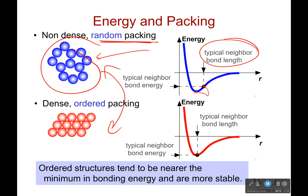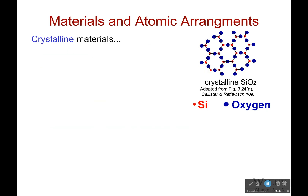That's not always the case, because we could have stacked it differently and increased our nearest neighbor bond length — it's not packed quite as densely. It's still ordered, just not as densely packed. So the more dense, the more ordered, typically the more stable.